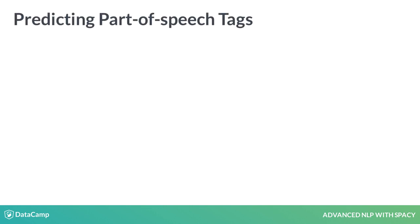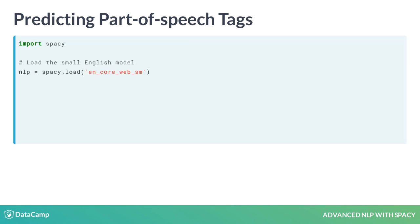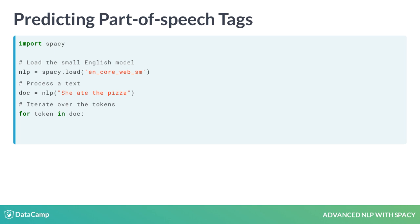Let's take a look at a model's predictions. In this example, we're using spaCy to predict part-of-speech tags — the word types in context. First, we load the small English model and receive an NLP object. Next, we're processing the text 'she ate the pizza.' For each token in the doc, we can print the text and the pos_ attribute, the predicted part-of-speech tag.